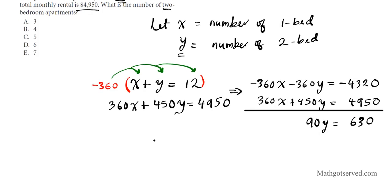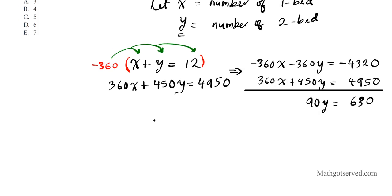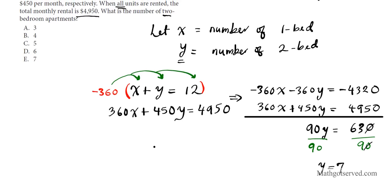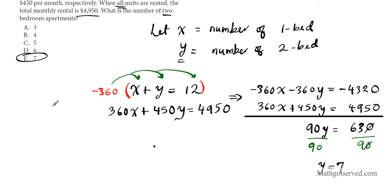To finally isolate y, I divide both sides by 90. 9 goes into 63 seven times. So you have seven two-bedroom units. So the answer is option letter E. Moving right along to question 7.